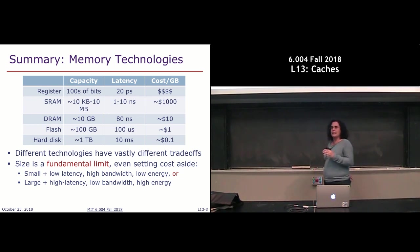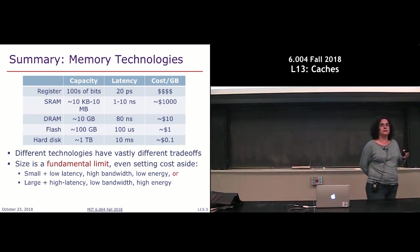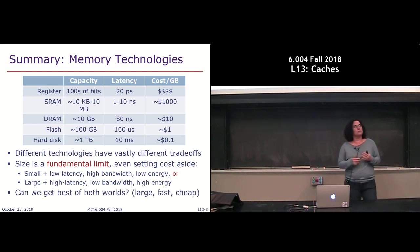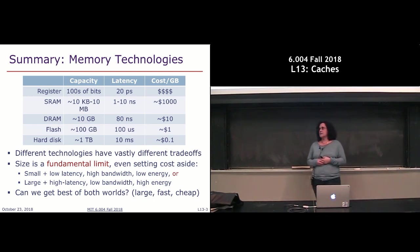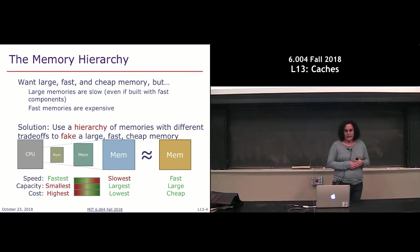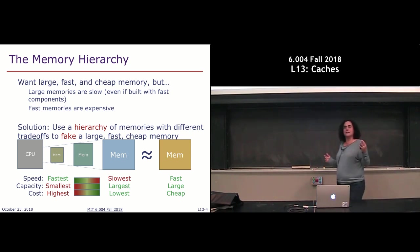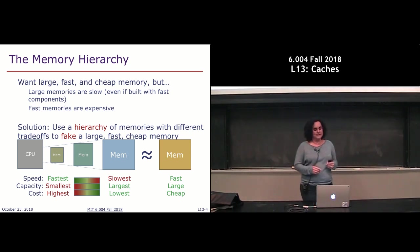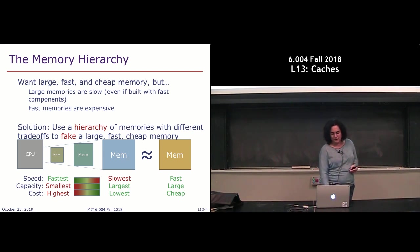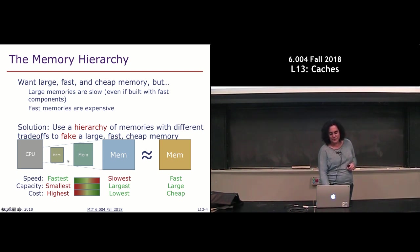So that's how these memory technologies work on their own, but what we'd like to do is think about whether we can use them in some combination so that we can effectively end up with something that looks like a large, fast, and cheap memory as far as the processor is concerned. The way we do that is by using a hierarchy of different types of memories, making it seem to the CPU like it's talking to one large, fast memory, when in reality there are several different levels of memory.